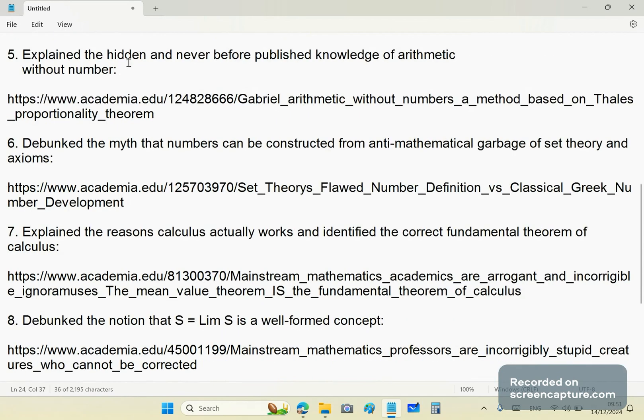Number five: I explained the hidden and never-before-published knowledge of arithmetic operations, the four basic arithmetic operations, without number. You know what that means, you fools? It means that the way you do arithmetic with fractions and with all numbers comes from geometry. And being the genius that I am, I explained these things to you in this article. It's free. So go there, download it, and study it, you morons.